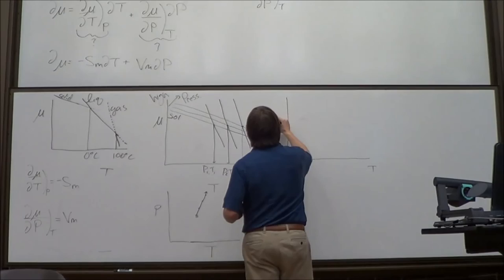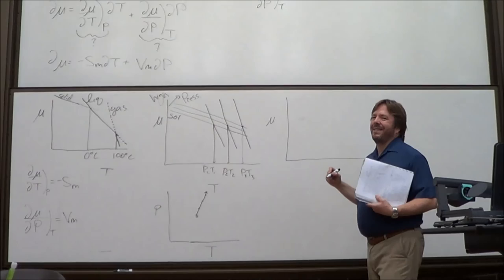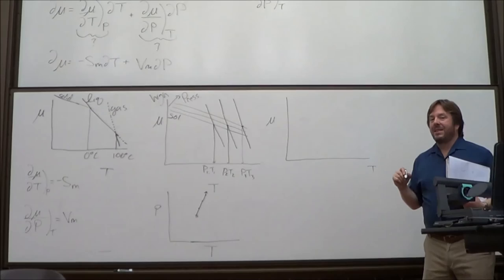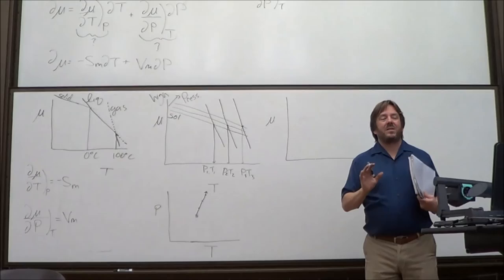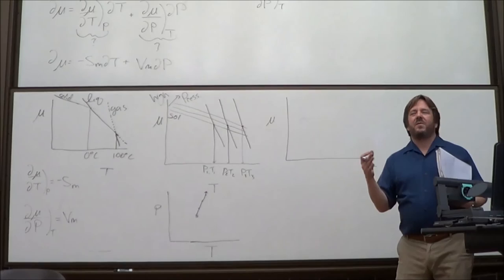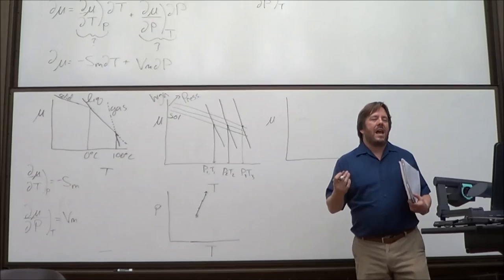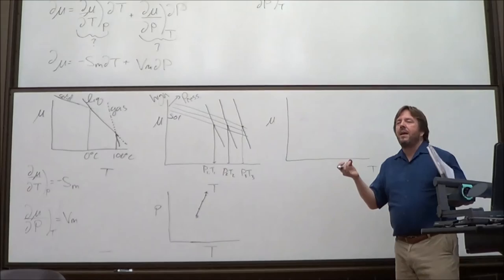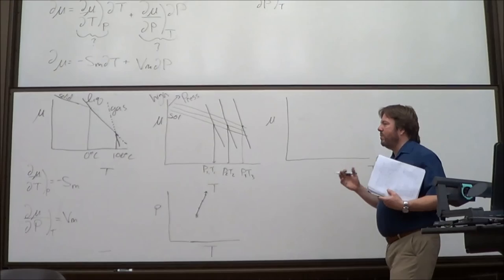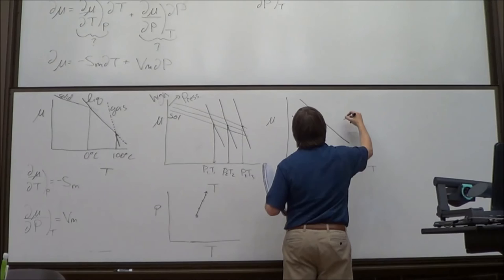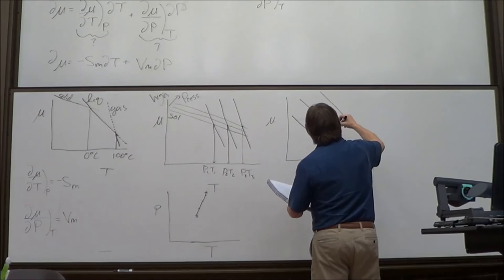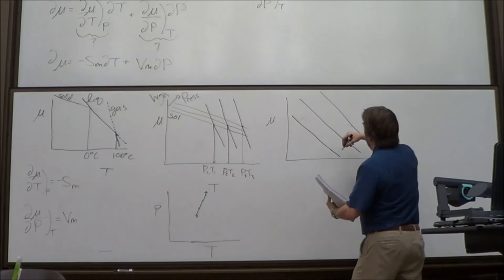But water is an exception. For water, the liquid is more dense than the solid — ice floats. That means ΔV going from solid to liquid is negative. So for water, the solid's lines are more widely spaced under increased pressure than the liquid's lines, reversing the usual comparison. This means that for water, higher pressure leads to a lower melting temperature.